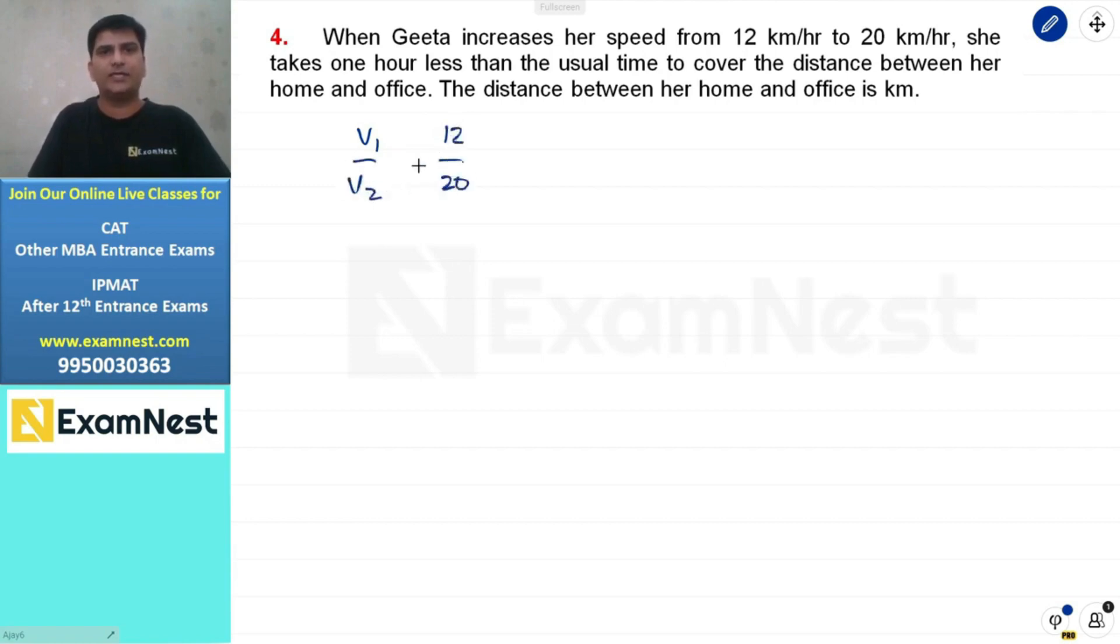We have two different situations where the speeds are given. The speed ratio is 3 over 5. So what is the time taken ratio? It is 5 upon 3.